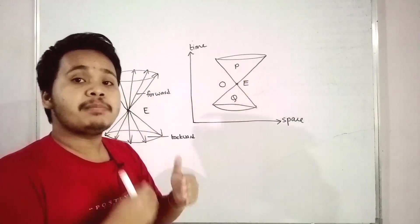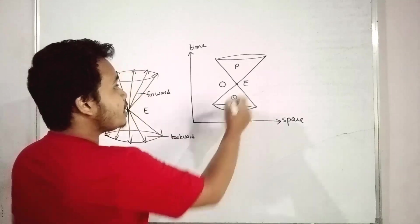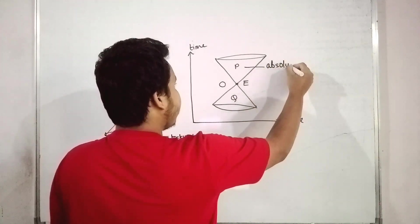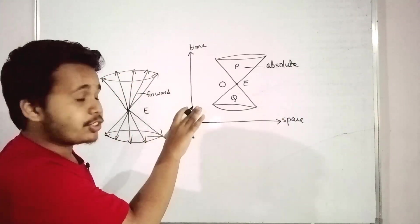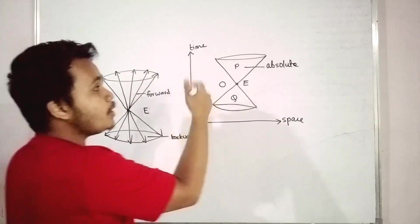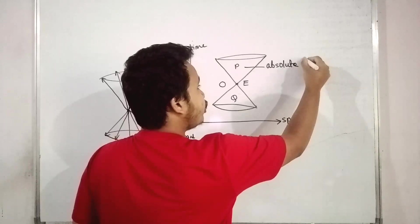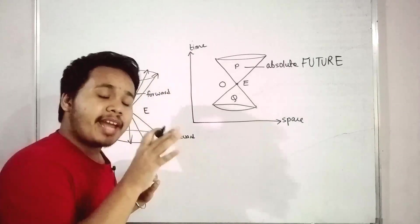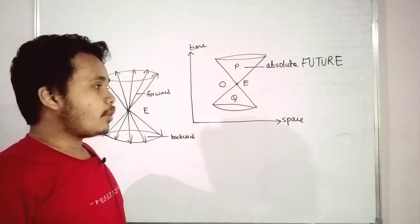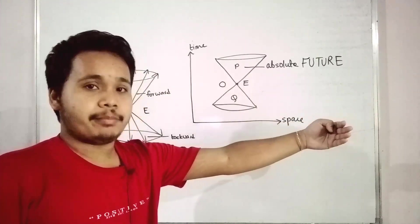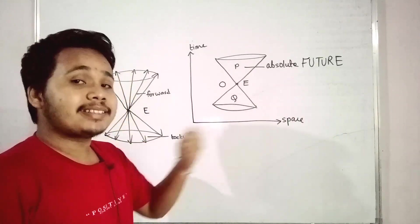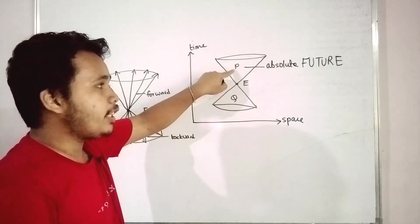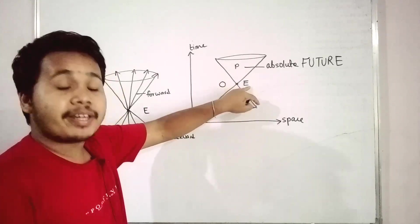Event P is called the absolute future. We use the term 'absolute' because from any frame you consider, the results will be exactly the same — you and I will always agree that event P will be sometime later than event E. That is why it is called absolute future.